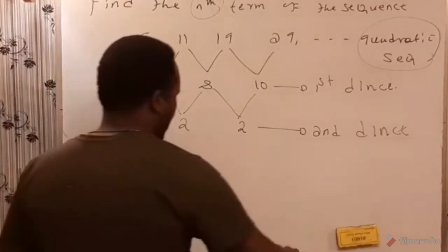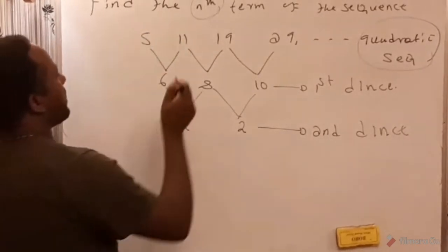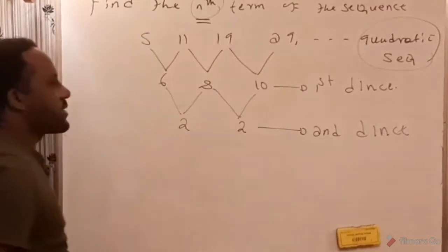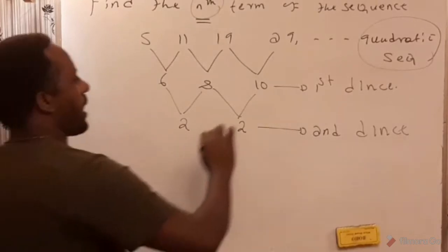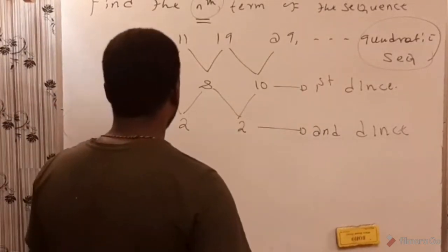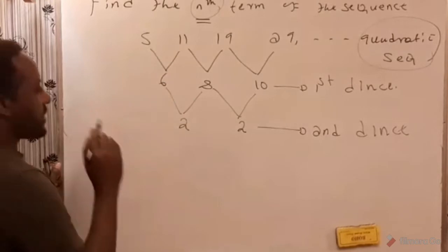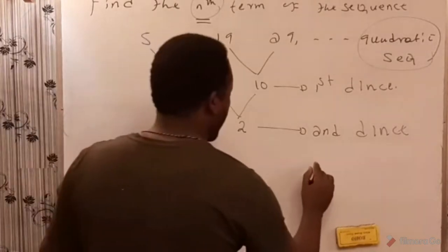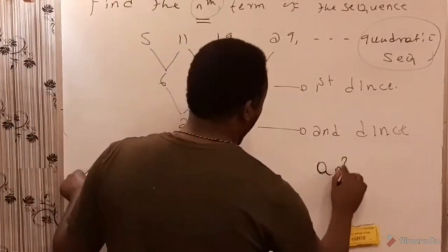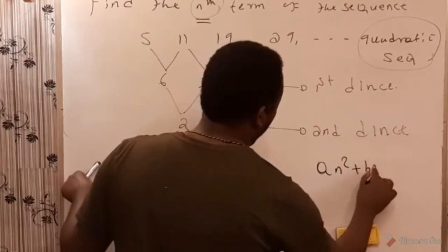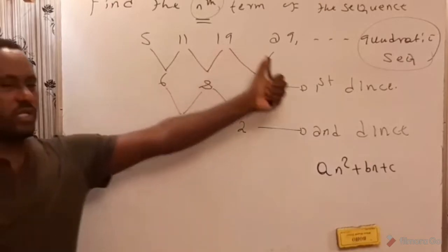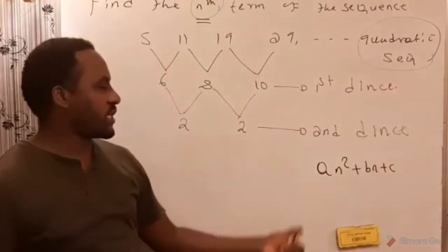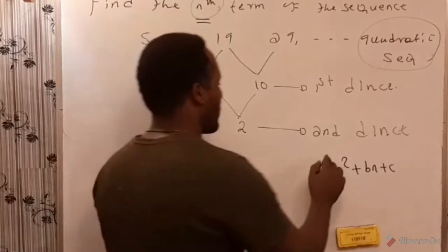Our objective now is to determine the general term for this quadratic sequence. In order to do that, we must represent the general term. The general term for any quadratic sequence is always given by an² + bn + c. Since this is a quadratic sequence, the general term must take this form.